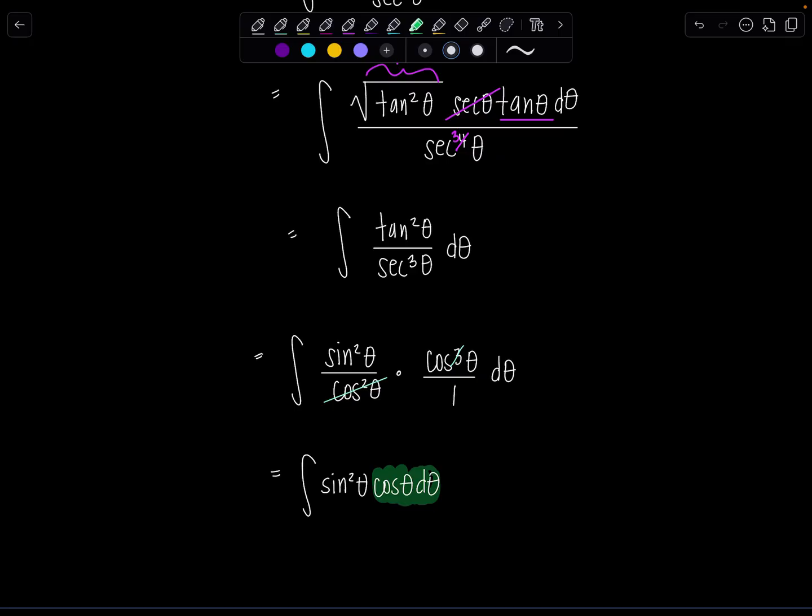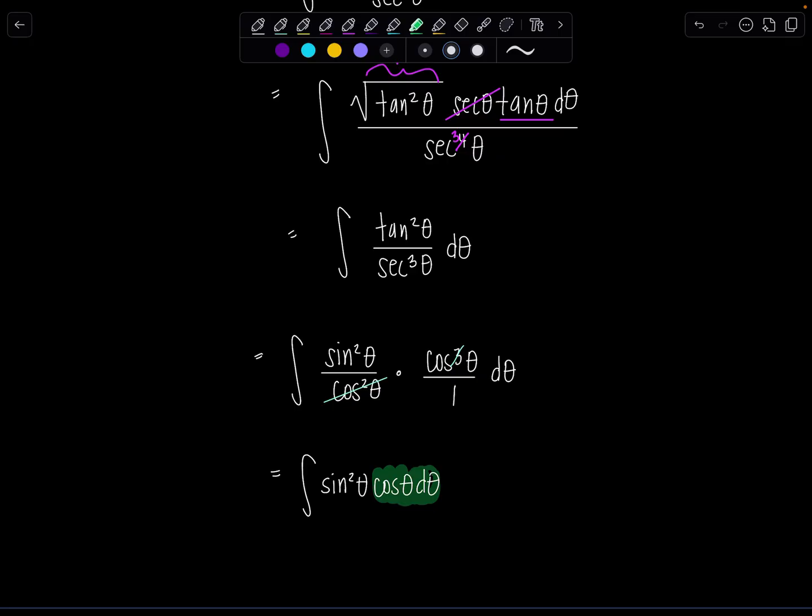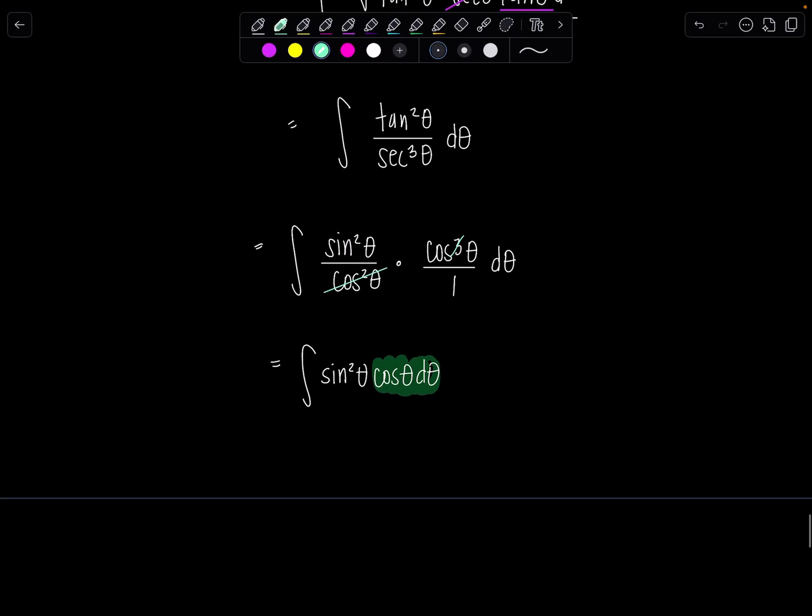So what I just highlighted cosine theta d theta you want that to be absorbed. You want that to be du. So then think backwards. U would need to be just sine theta not sine squared theta just sine theta. So then du is cosine theta d theta. Fabulous.